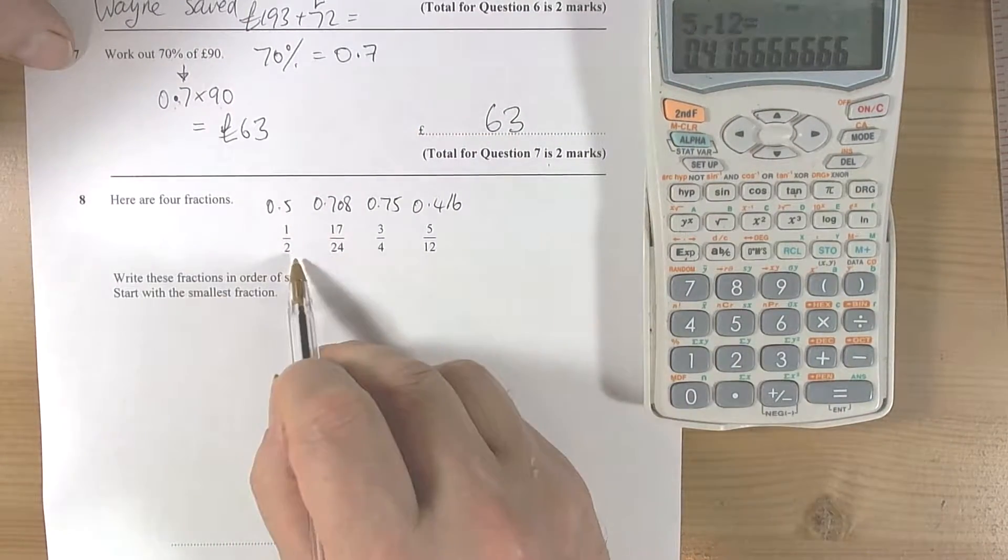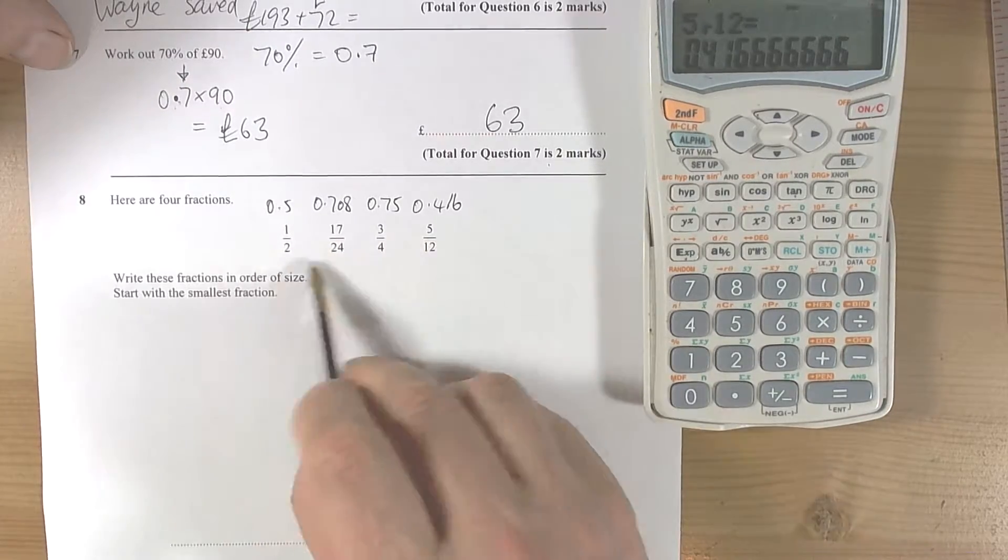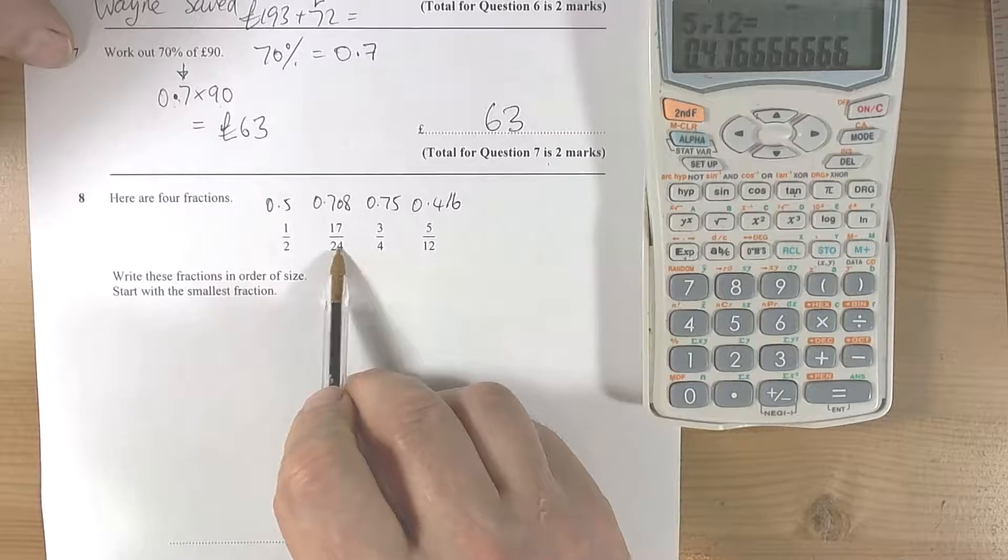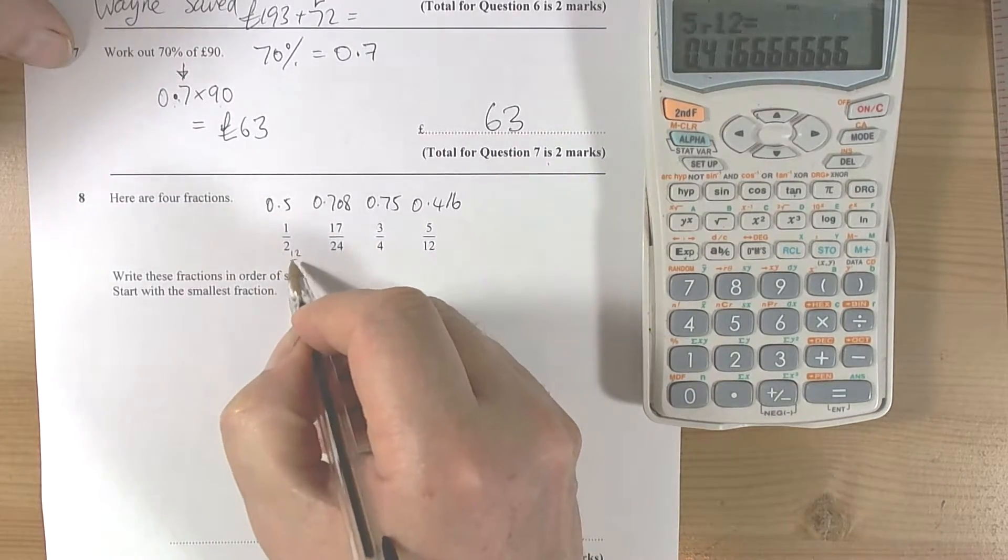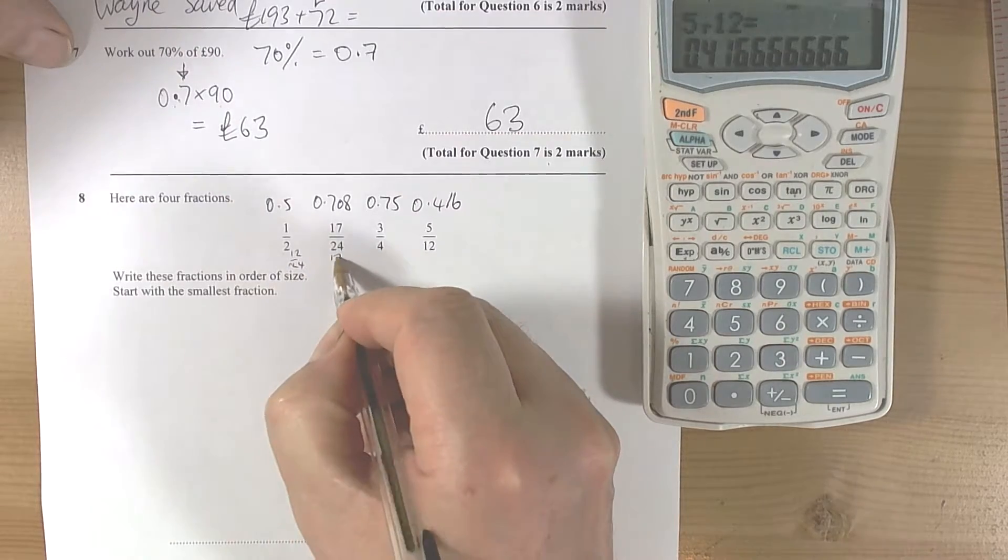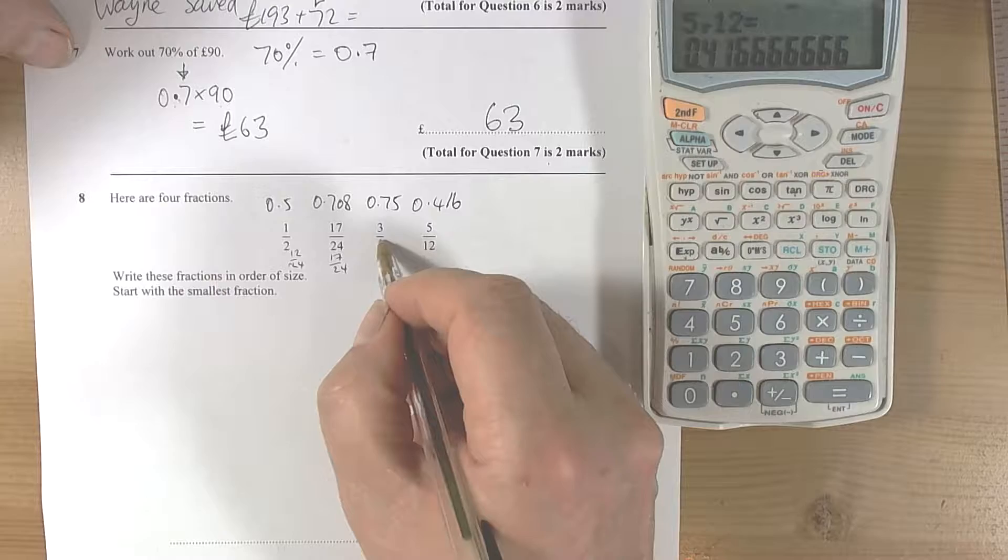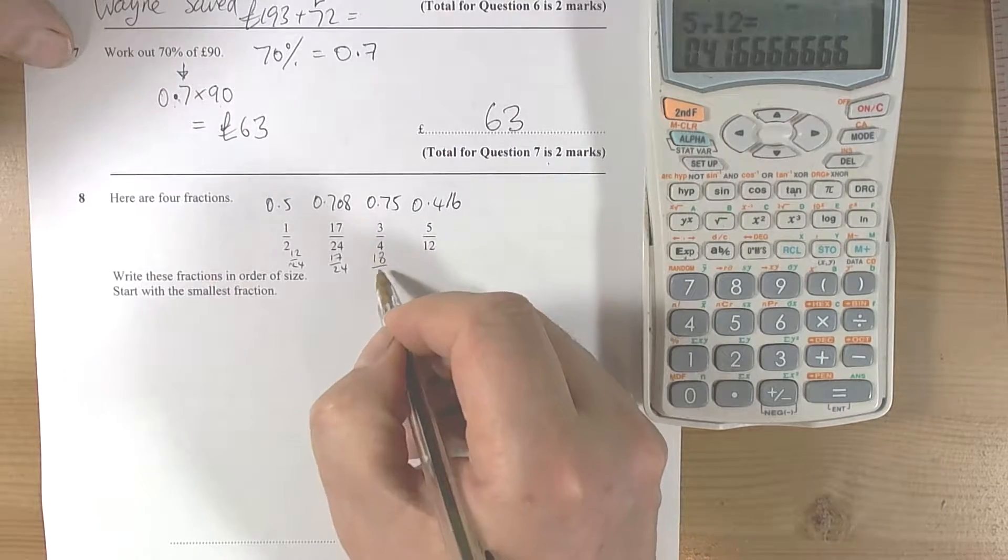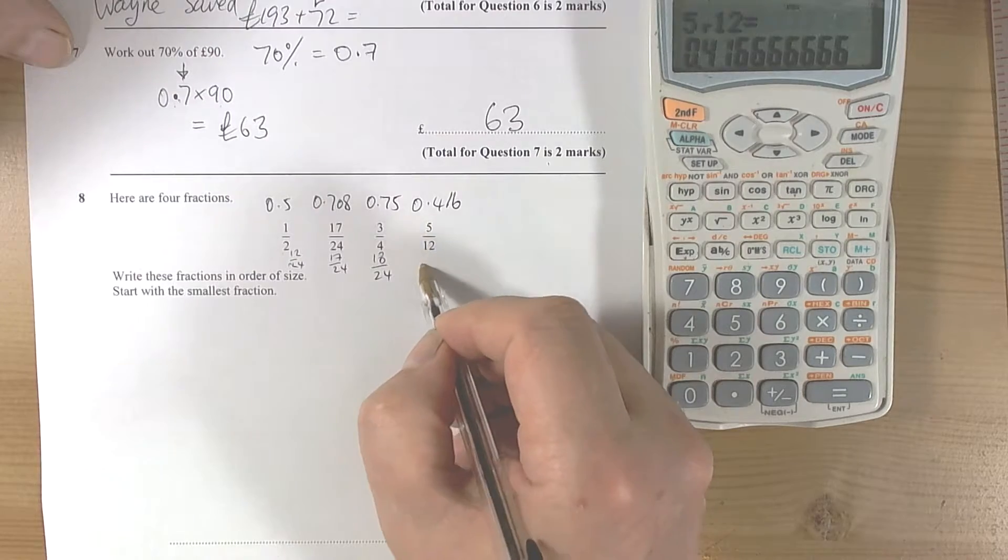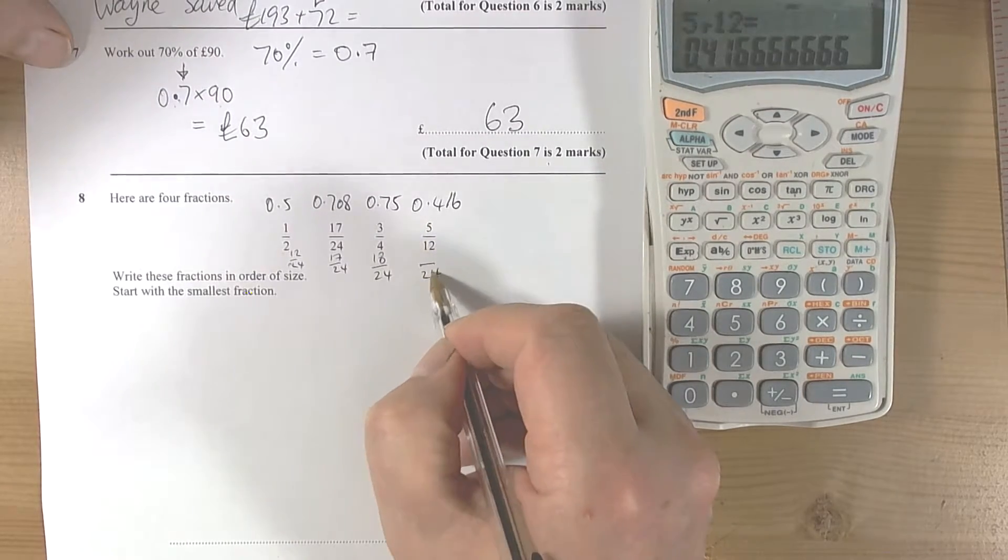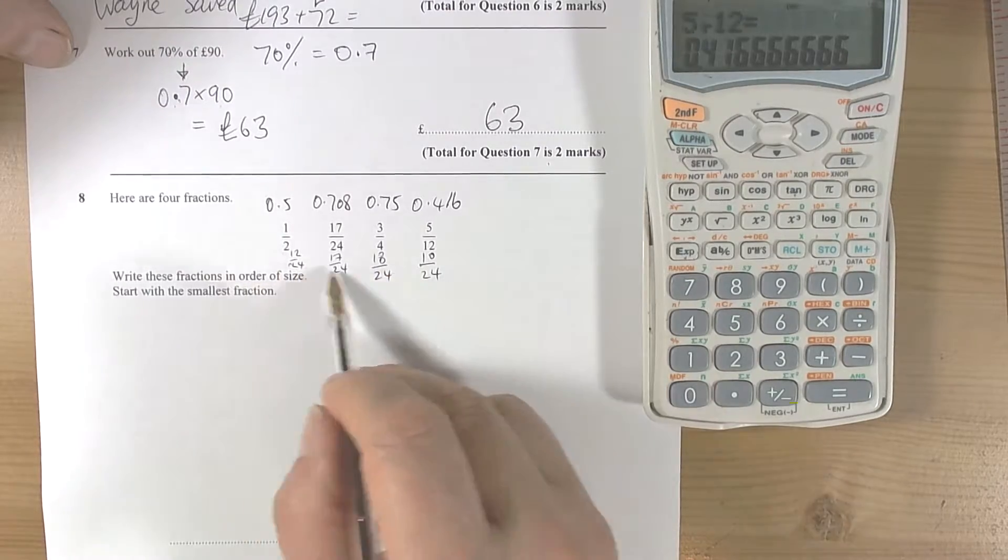The other way of doing this of course is to recognize that we could change these all into the same common denominator. Now as it happens, all these numbers will go into 24, so we could change this into 12/24. We recognize that this is already 17/24. 3/25 will be times 4 by 6, so that's going to be 18/24 because 3 times 6 is 18. And 5/12 to become 24, 12 is doubled, so the 5 will be doubled as well. So we can do it by common denominators or we could change them all into decimals.